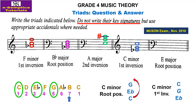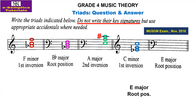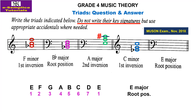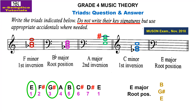Next is E major, root position. The key signature accidentals are F sharp, C sharp, G sharp, and D sharp. The triad — root, a third above, a fifth above — stacking gives E, G sharp, then B. Let's put that on the stave: E first, G sharp, B.